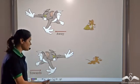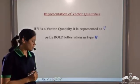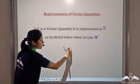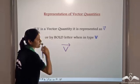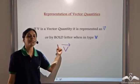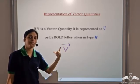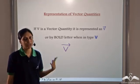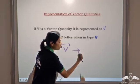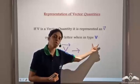Having studied what vector quantities are, let us study how we represent them. If V is a vector quantity, it is represented as V with an arrow on top. An important point to note is that this arrow does not indicate the direction of V — the direction of vector quantity V can be north, south, east, west, or anywhere — but we always draw the arrow pointing to the right-hand side. In books, you may find vector quantities typed in bold letters.